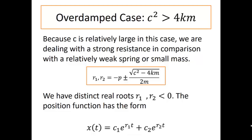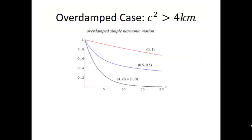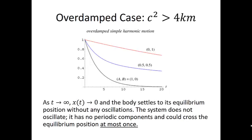Graphically in this over damped case, if we wanted to graph the motion, it would look something like this for some different values of our constants. Notice that regardless, as T approaches infinity, our position function X of T approaches 0 and the body settles to its equilibrium position without any oscillations. The system does not oscillate. It has no periodic components and could cross that equilibrium position at most once. That's the over damped case when C squared is bigger than 4KM.